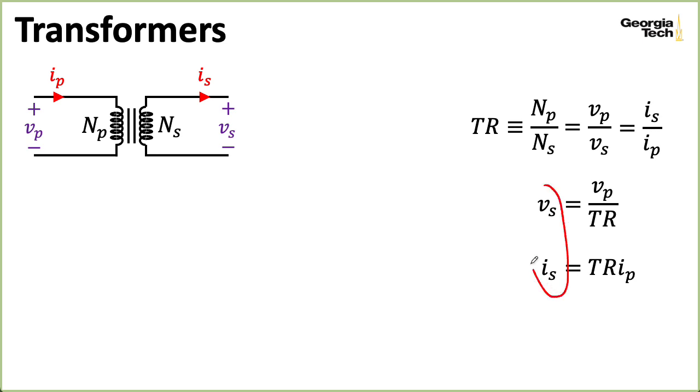Notice if I were to multiply the quantities on the left and multiply the quantities on the right, the turns ratio cancel. And I see that the power on one side of the transformer is the same as the power on the other side of the transformer.